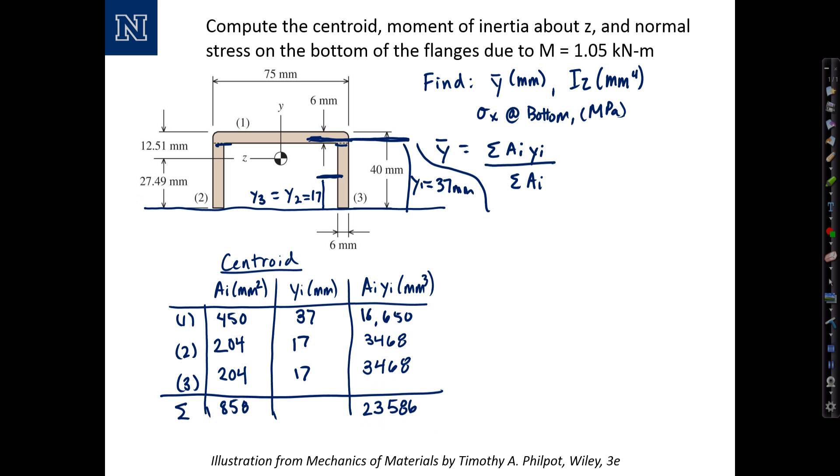So now I can complete the calculation. The sum of a sub i times y sub i, 23,586 millimeters cubed, divided by the sum of a sub i, 858 millimeters squared. And this gives me a y bar, and if you do the calculation, you can verify that this is 27.49 millimeters.